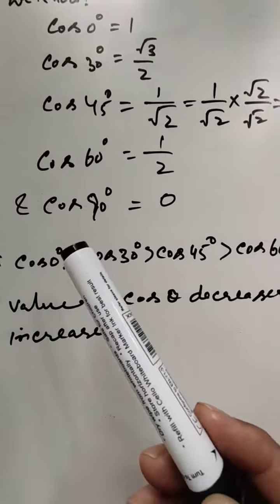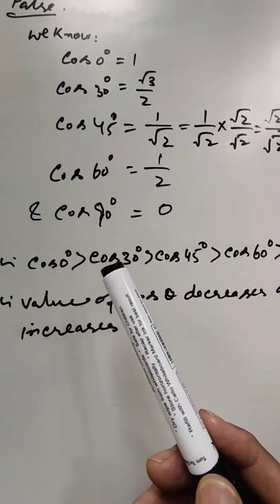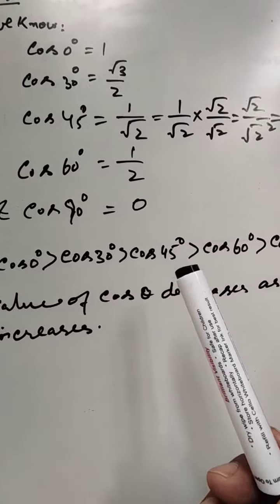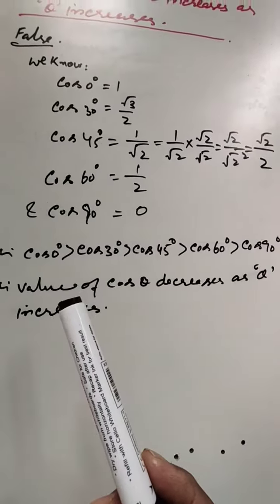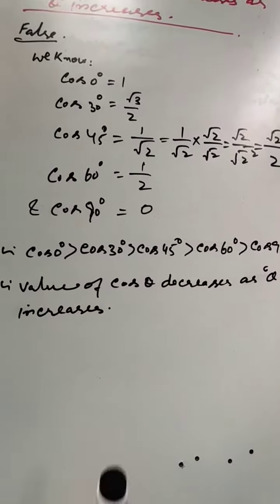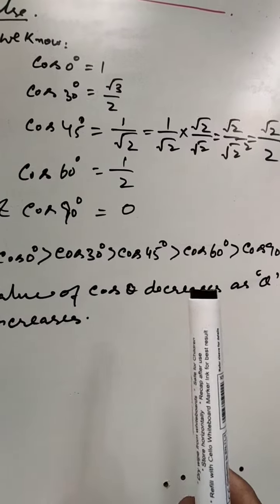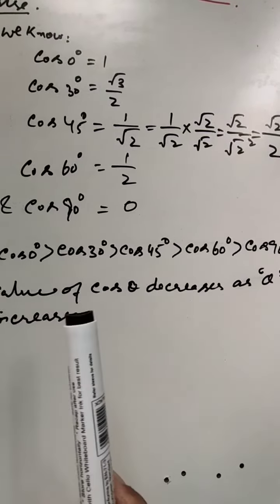Therefore, cos 0° > cos 30° > cos 45° > cos 60° > cos 90°. As we see, the value of cos θ decreases as θ increases.